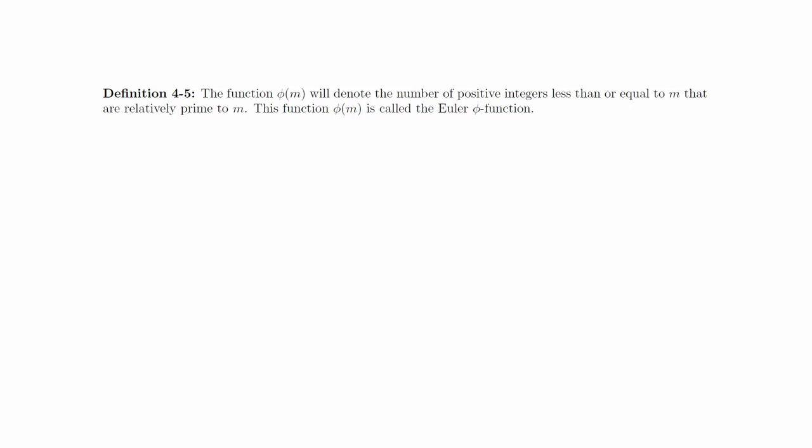We've looked at the Euler-phi function, which counts the numbers relatively prime to n that are less than n, and we've looked at the Mobius function, which has the unusual definition that involves looking at the prime factorization of n.